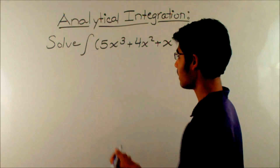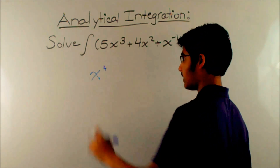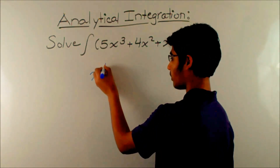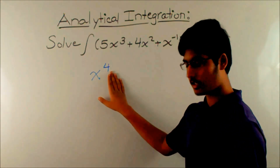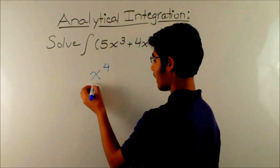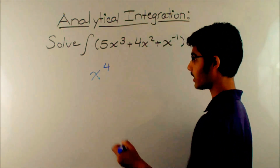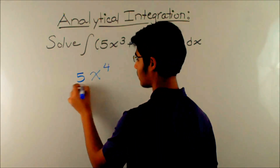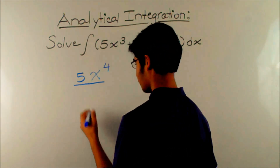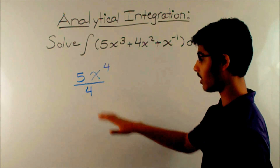We know that for 5x cubed to be the derivative, the original term had to have x to the fourth in it. According to the power rule, you subtract 1 from the exponent, so the original exponent had to be 4. The coefficient was multiplied by 4, but here we only have 5, and 5 is not divisible by 4. So the coefficient is 5 fourths — we write it as 5 fourths x to the fourth, or 5x to the fourth all over 4. We'll leave it as a fraction since it's easier to deal with fractions in calculus.